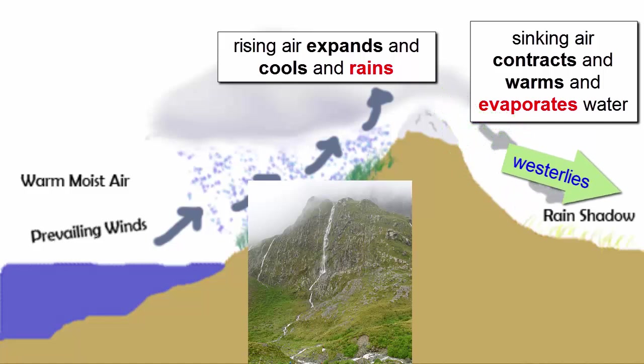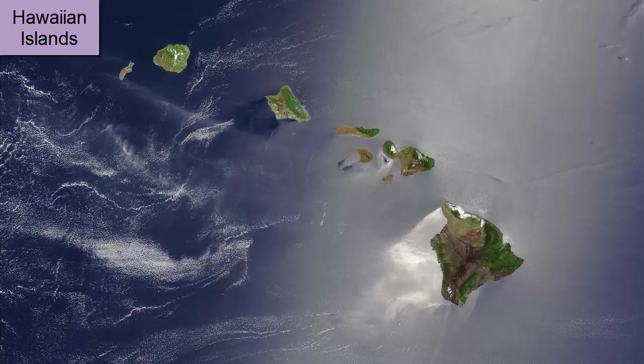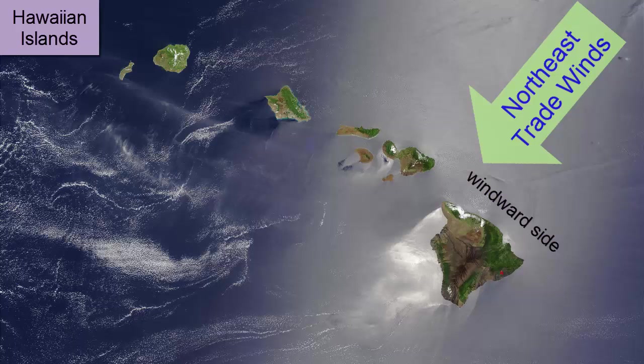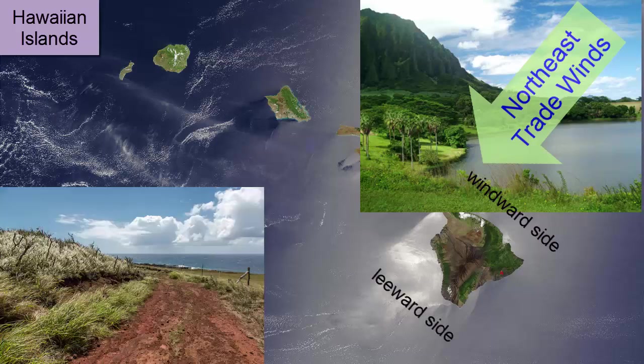Its relative humidity is close to zero, and its capacity for water is high because it's so hot. Evaporation reigns supreme and we get what's called a rain shadow desert. Those of you who have traveled to Hawaii have seen similar climate zones associated with the windward northeastern side of the islands, directly hit by the northeast trade winds as they move equatorward. These are the wet sides of the island. The opposite sides, the leeward sides, are much drier.